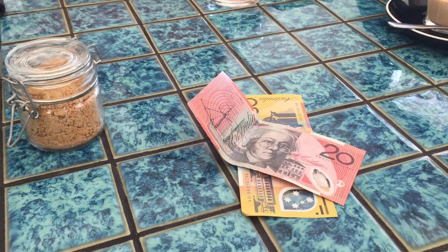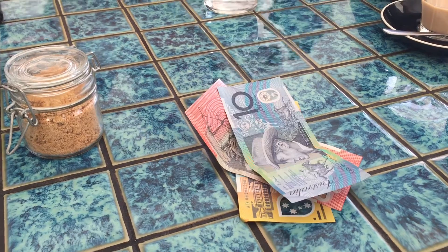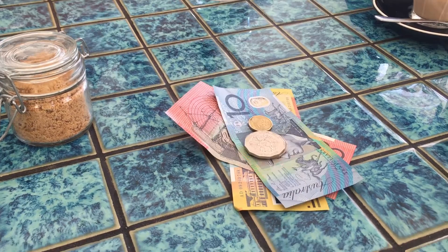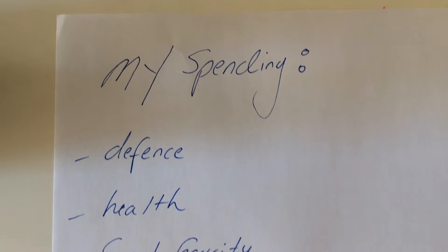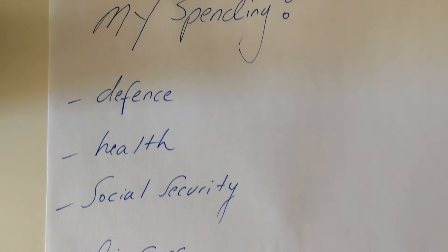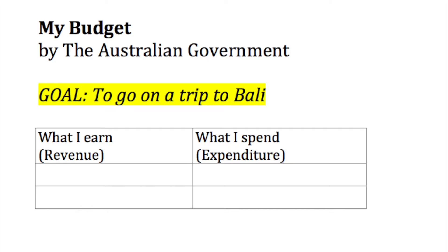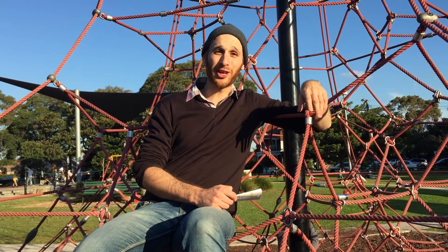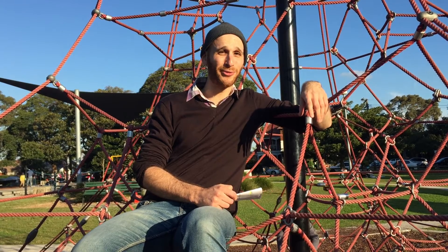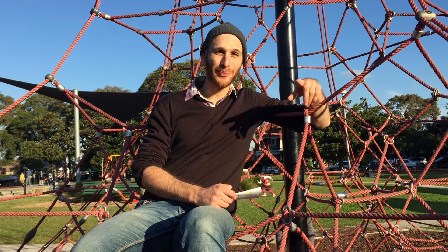The federal budget consists of revenue, the money the government earns, and expenditure, the money the government spends. It's much like a household budget. That all seems pretty straightforward, but here's where it gets a little bit tricky.